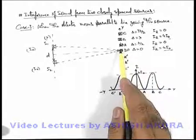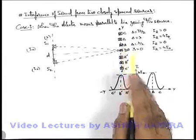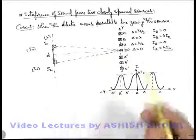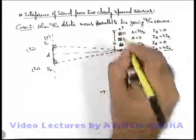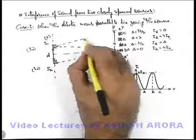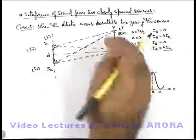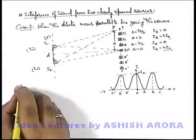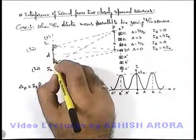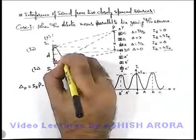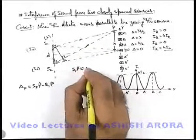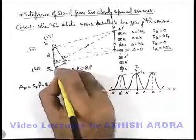We can also mathematically find out the locations of these points where maxima and minima of intensity are occurring, for which we need to use the expression for intensity and path difference. In general, consider a point P located at a distance x from point O, which was the initial location of the detector. The path difference of the two waves at point P can be given as S₂P minus S₁P. Since the sources are closely spaced, we can find out the difference by dropping a perpendicular from S1 to the line S₂P, say at point Q. Then S₁P can be approximately taken as QP, so S₂Q is the extra path covered by the wave from the second source to point P.